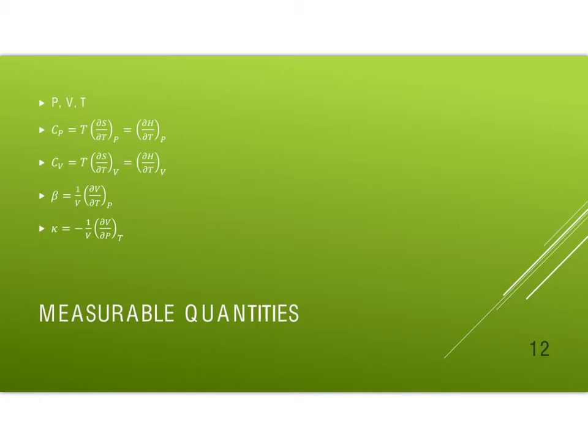So our measurable quantities, pressure, volume, and temperature. But we can also measure Cp or Cv by looking at energy changes, heat transfer basically, through a constant pressure process or a constant volume process. And we can measure changes in volume as we change temperature or pressure. And these compressibilities, how volume changes with temperature or pressure, are things that are measurable and occasionally for some substances recorded. So this is going to be our list of measurable quantities. So we're going to want to translate changes in a variable, so H for instance, into things that relate to just these quantities, things that we can measure.